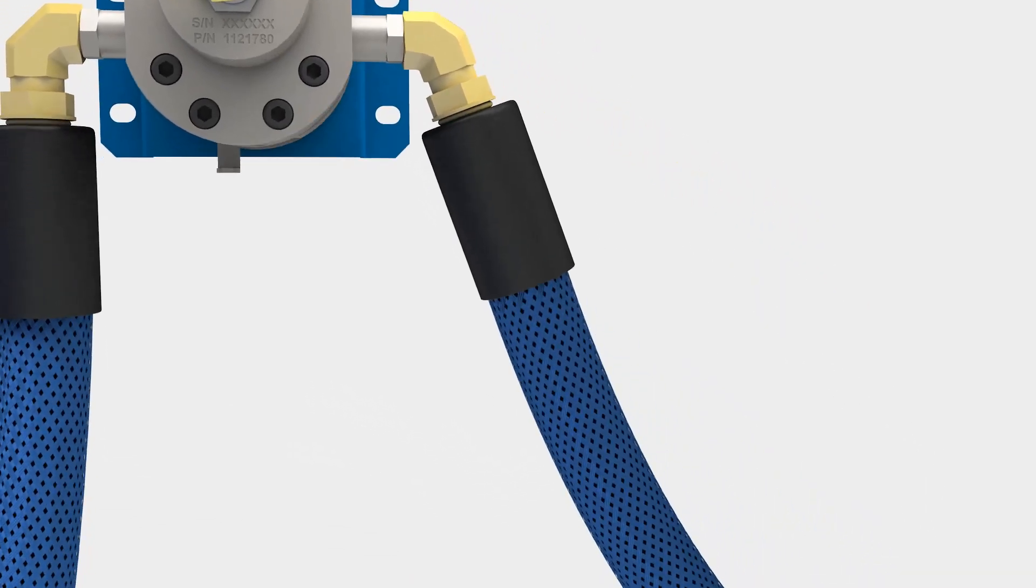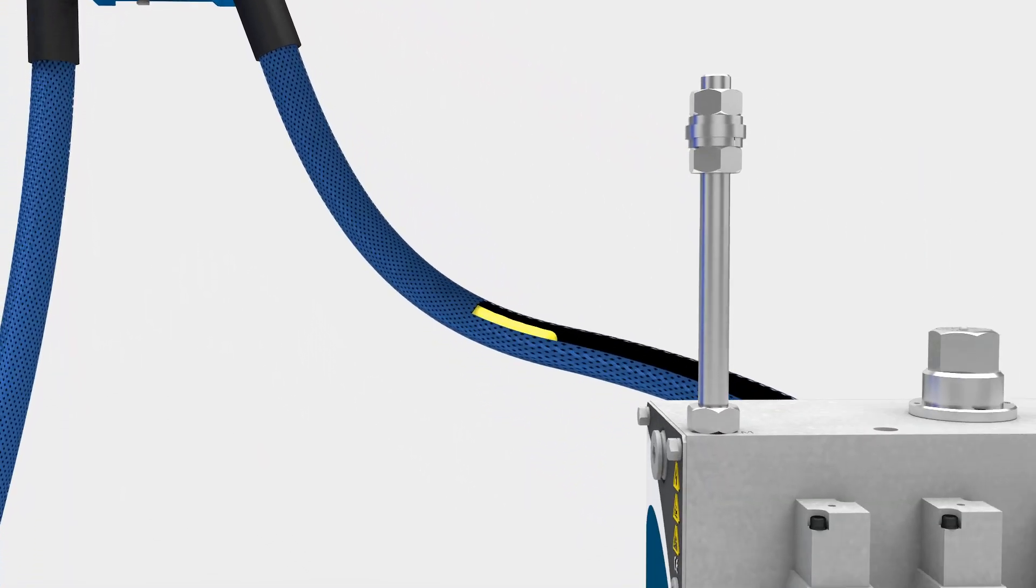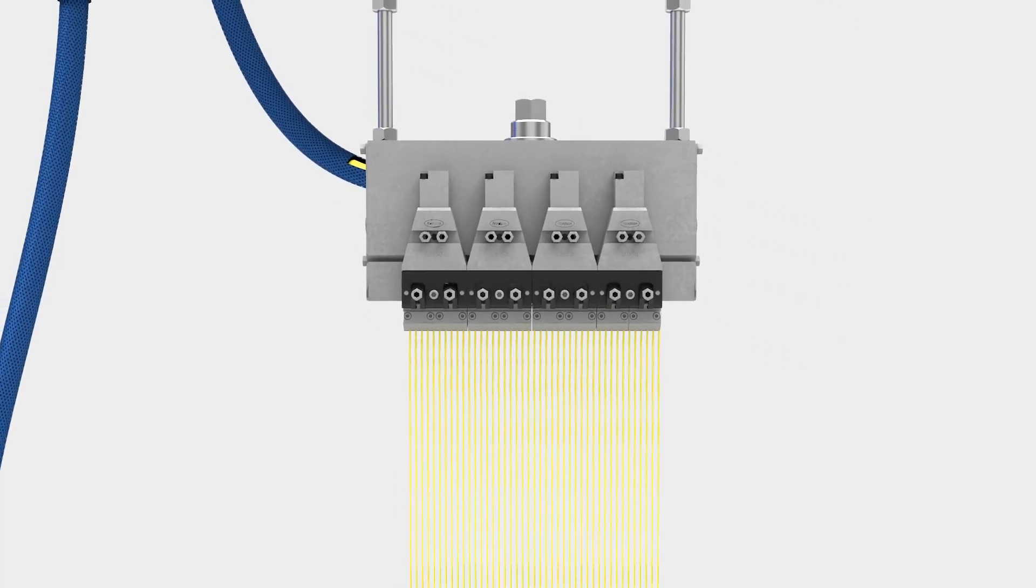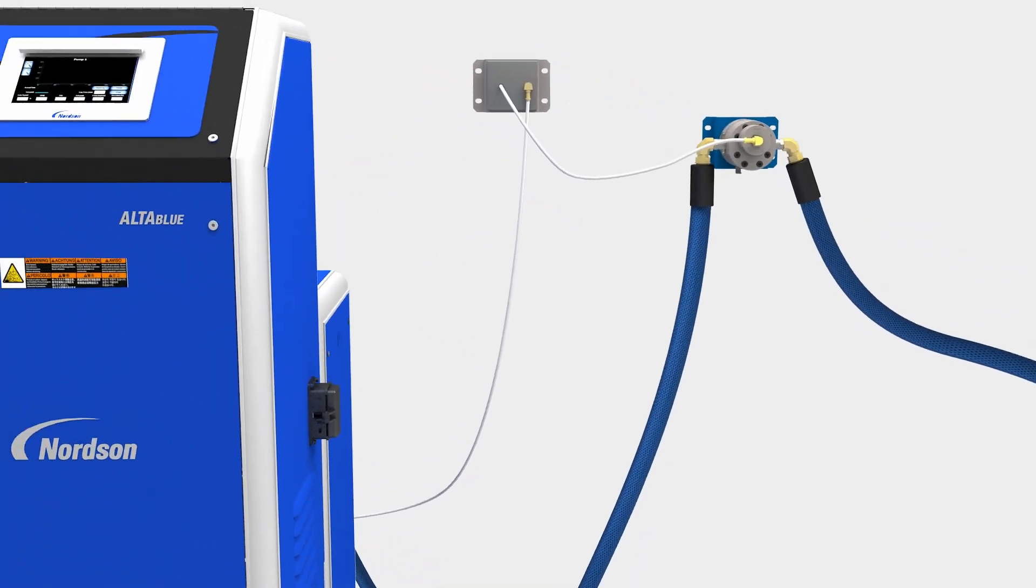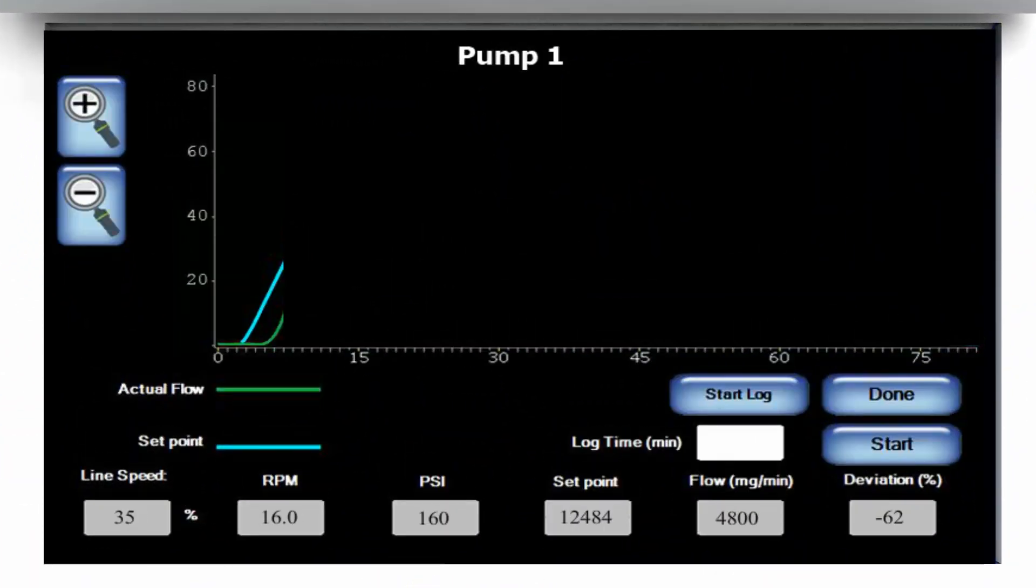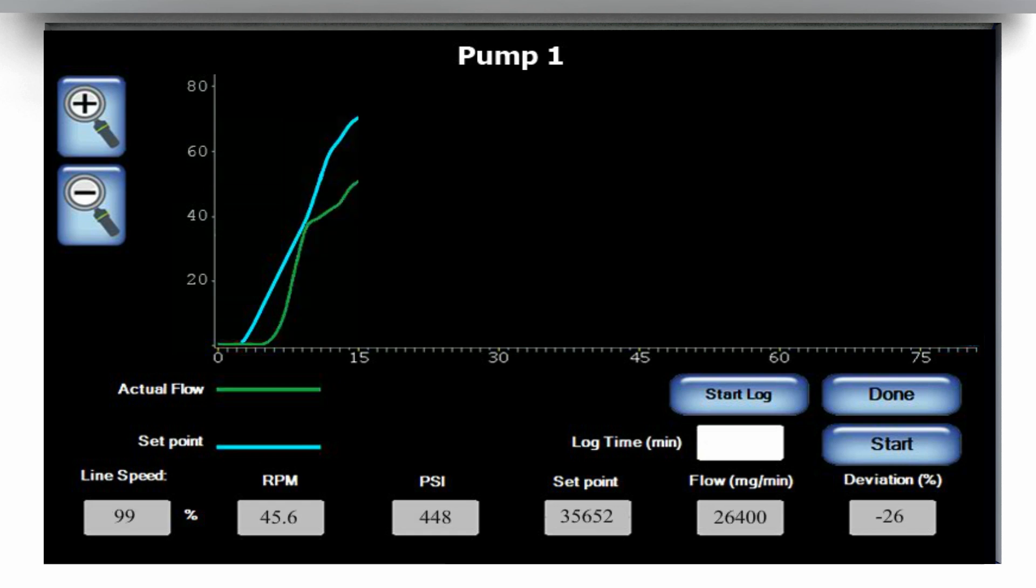This measurement allows manufacturers to understand exactly how significant the material delivery variation is at all phases of production, particularly ramp up and ramp down when the melter pump is challenged to keep up with the rapidly changing line speed. This understanding is the second step in our three-step process.